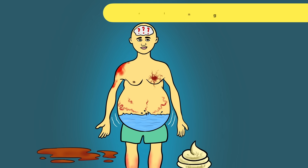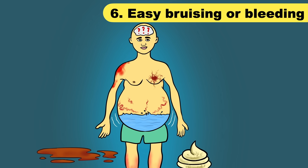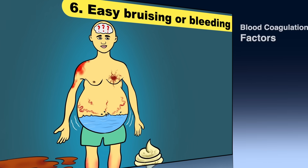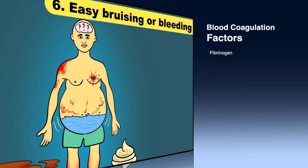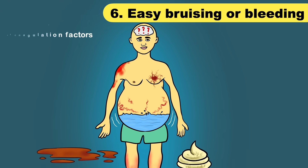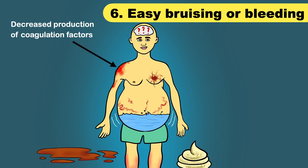The next important finding is easy bruising or bleeding. Liver cells are involved in the synthesis of most blood coagulation factors, such as fibrinogen, prothrombin, factor 5, 7, 9, 10, 11, and 12, as well as protein C and protein S. These factors help in blood clotting. In chronic liver disease, there is decreased production of coagulation factors, and as a result, you can experience easy bruising or bleeding.